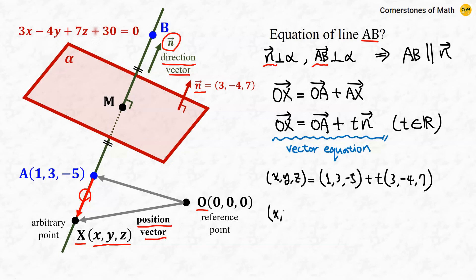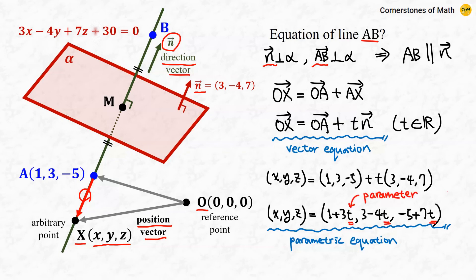So we have (x, y, z) = (1 + 3t, 3 - 4t, -5 + 7t). This is the parametric equation of line AB, where this T is called the parameter.